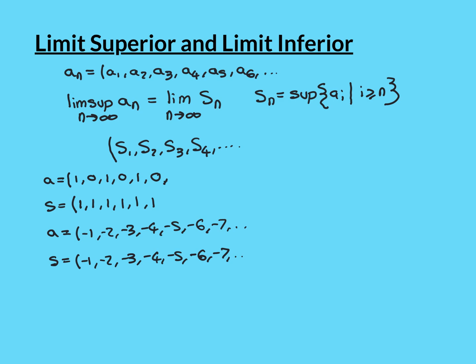Finding the limit superior can go wrong in multiple ways. Either you can't even construct the sequence S_n because the sequence isn't bounded above, or it can go wrong for other reasons. Here, S1 = sup of all terms = -1 (the maximum), S2 = sup from the second term onwards = -2, then -3, -4, -5, -6 — you get the exact same sequence back again. When you try to take the limit, the S sequence doesn't converge to a finite limit. So even though the sequence is bounded above, it doesn't necessarily have a limit superior.